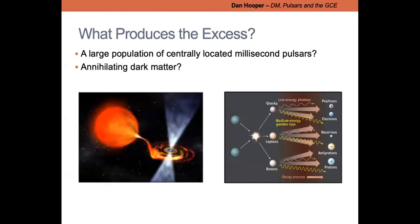Over the course of the last dozen years, there has been a lot of debate about what could produce the signal — dark matter annihilation versus millisecond pulsars. No one argues anymore that this excess isn't there; that issue has been put to rest. No one seriously discusses cosmic-ray outbursts either, as they don't fit the data very well. The debate has settled between annihilating dark matter and a large population of faint millisecond pulsars.